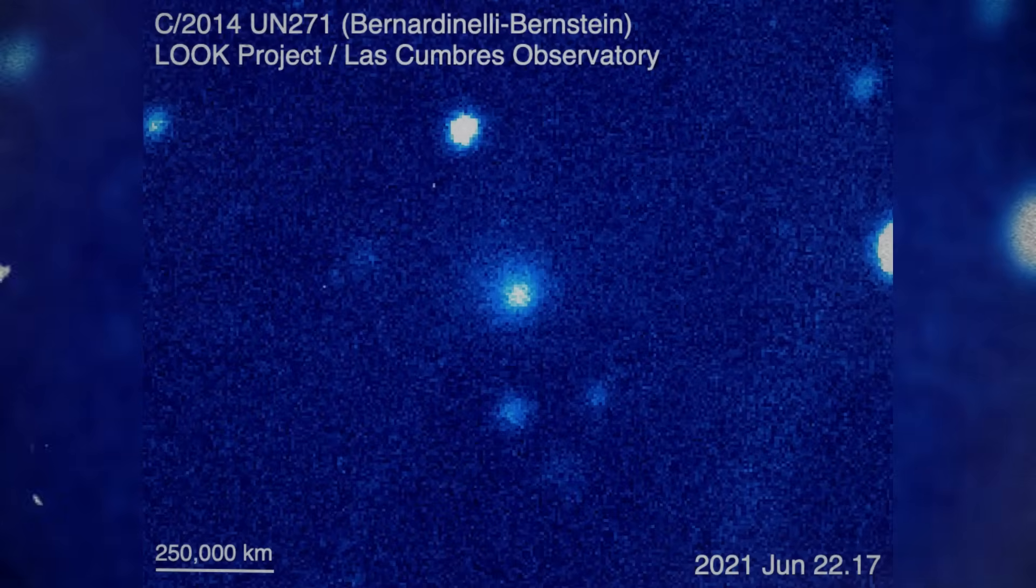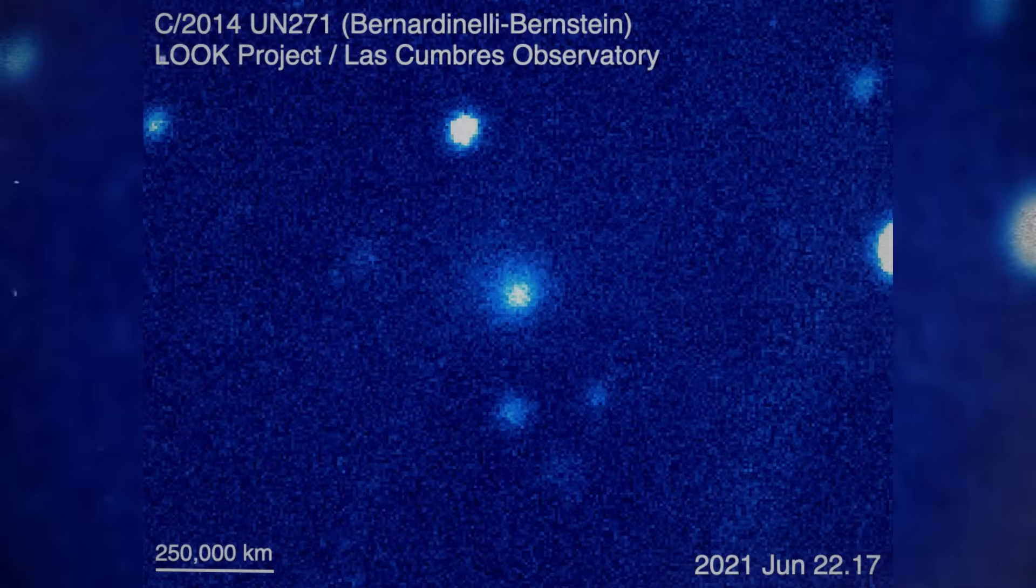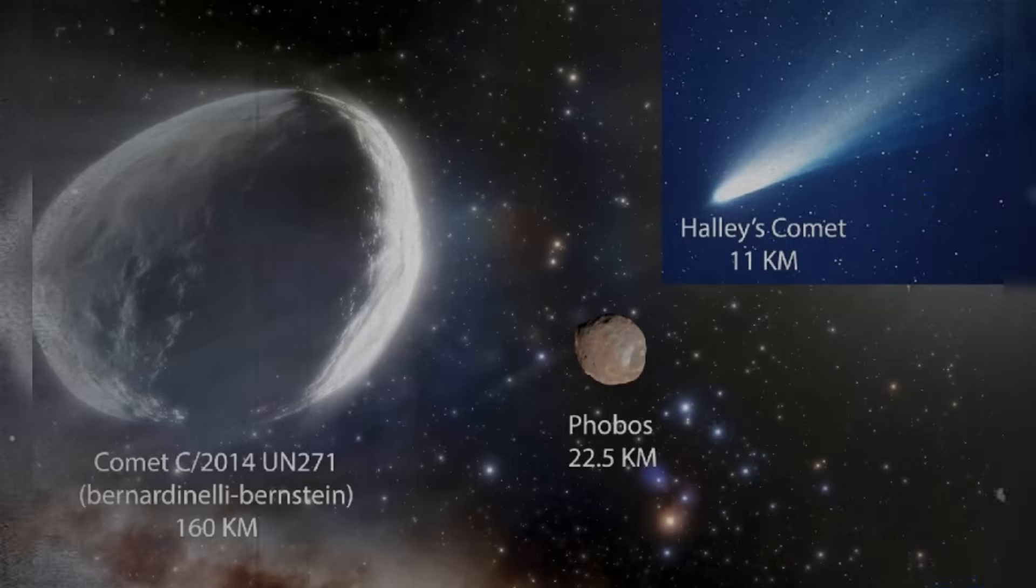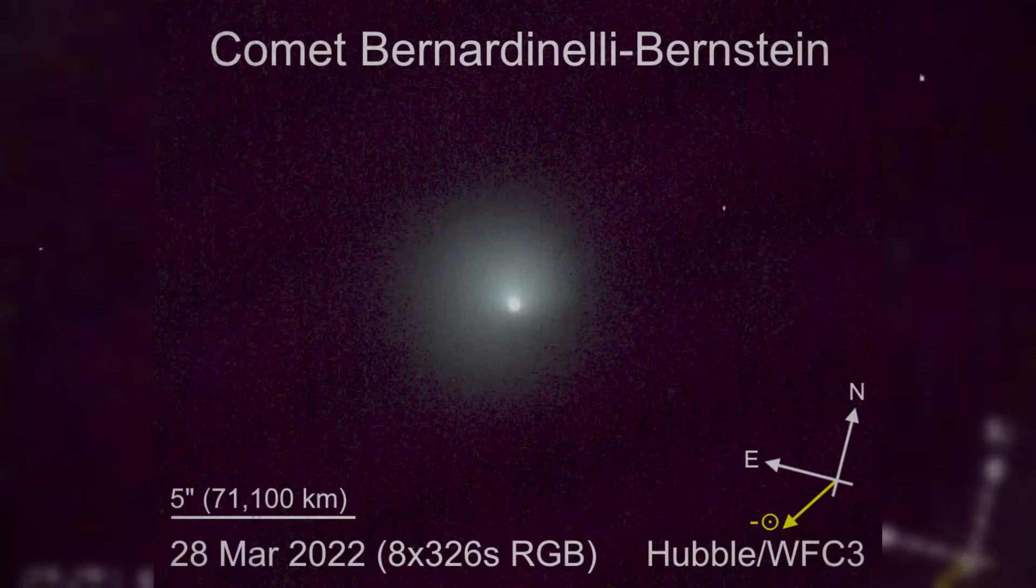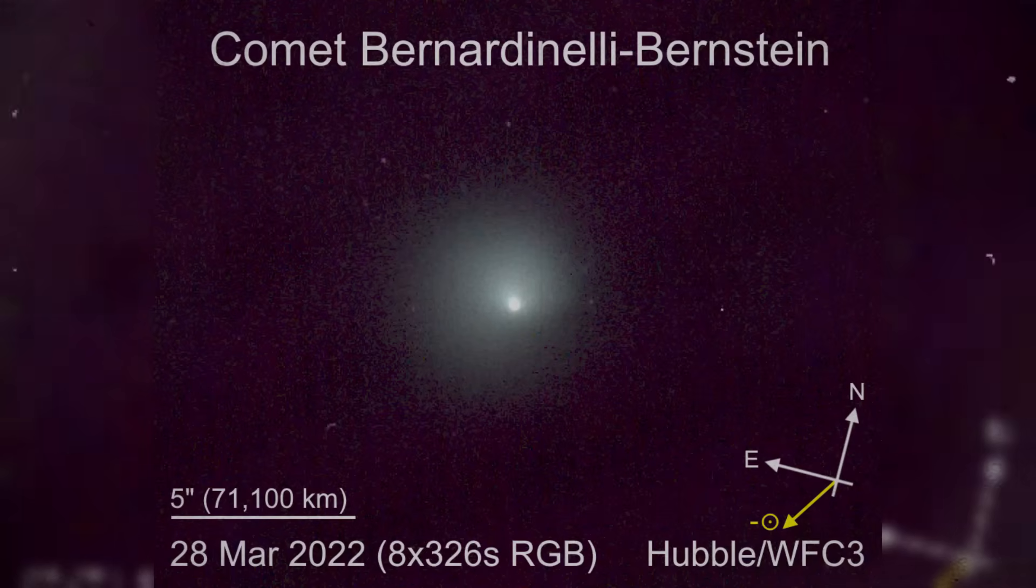C2014 UN271, known widely as the Bernardinelli-Bernstein object, has already earned its place in astronomical history for its extraordinary size. Early estimates placed it at around 100 kilometres across, making it one of the largest deep space bodies ever detected moving inward toward the solar system. But the newest data reveals something even more striking.